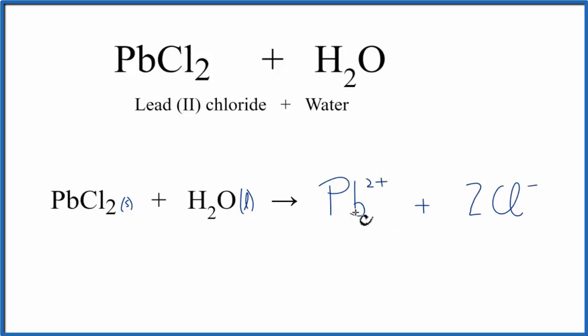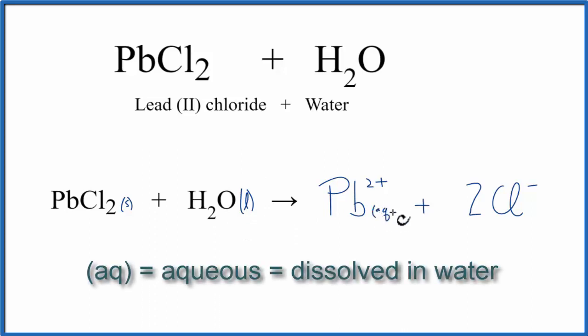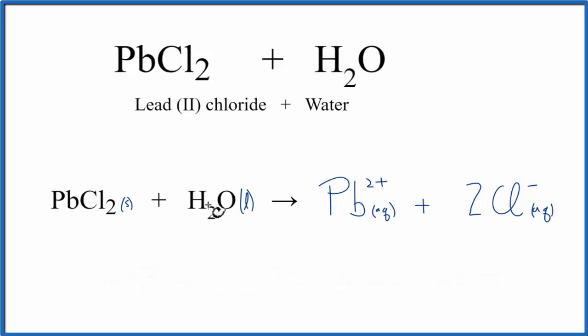Because these ions are dissolved in water, we can write Aq after it, which means aqueous, or dissolved in water. And because of that, we don't need to write H2O on this side of the equation. But do remember, we said this was slightly soluble. So there still would be PbCl2 solid in the container with the water. But for the stuff that's dissolved, this is the equation.